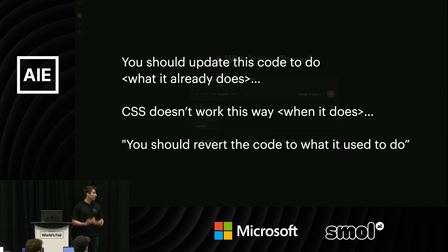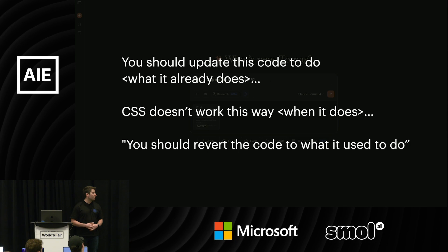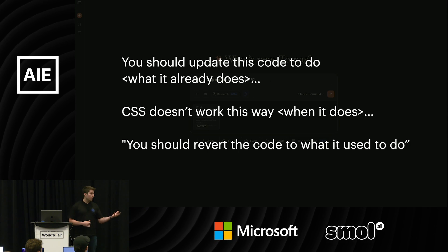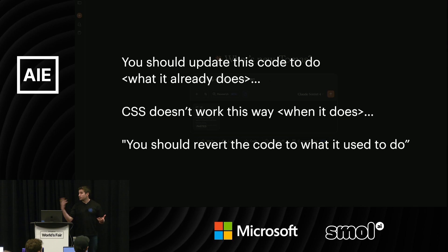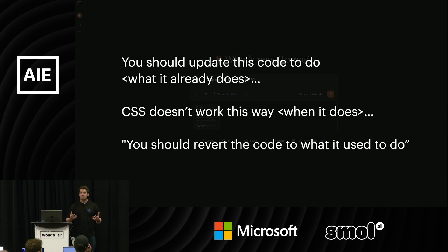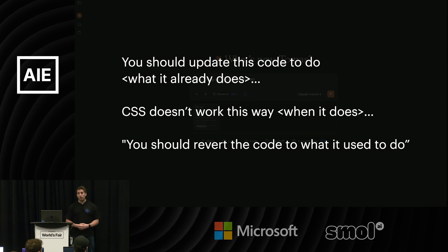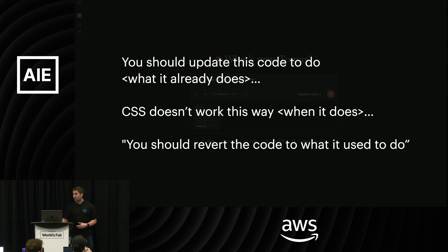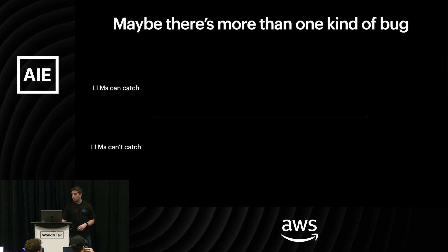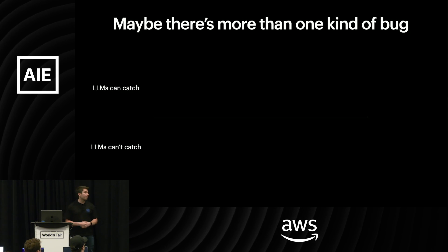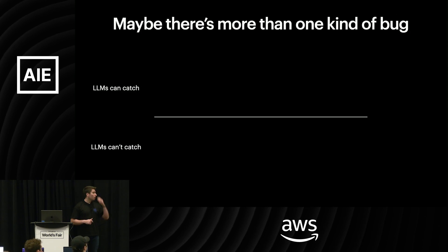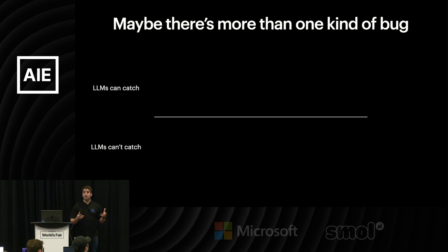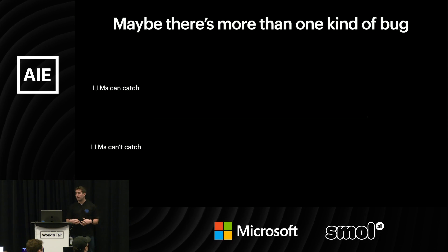Getting those lost us a lot of confidence, but we started to think: we're seeing some really good things and some really bad things, and maybe there's actually more than one type of bug — maybe there's more than one type of thing an LLM can find. And so we started with the most basic division of: there's probably stuff that LLMs are good at catching and things they're not good at catching.